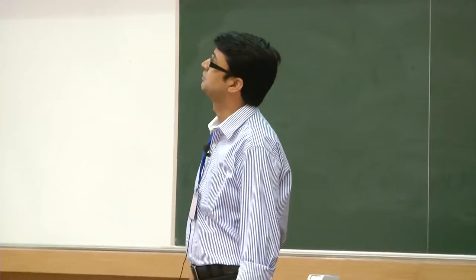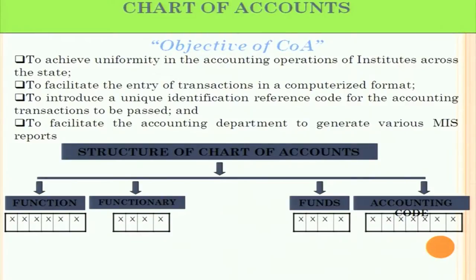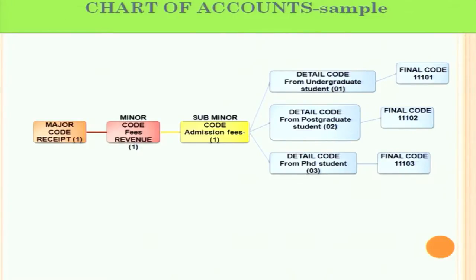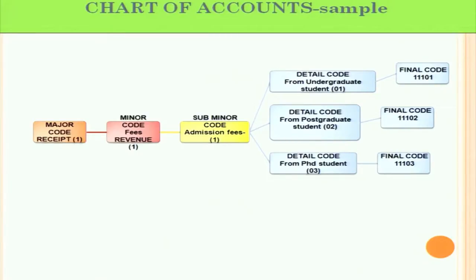Let me discuss the chart of accounts with an example. Taking major code 1 and minor code as fees: fees in a university can include undergraduate student fees, postgraduate fees, PhD fees, and other fees. For example, SRCC runs BCom, Economics, MCom, MA Economics, and a diploma course GBO — all with different fees, all clubbed under one head called 'Fees.' If management or MHRD asks how much money came from self-sponsored courses, coding makes filtering easy immediately.